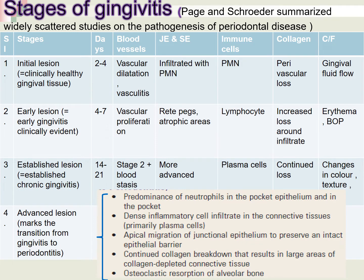Page and Schroeder summarized studies on pathogenesis of periodontitis and identified four stages of gingivitis. The first is the initial lesion, equivalent to clinically healthy gingival tissue, occurring two to four days after plaque accumulation. It features vascular dilatation and vasculitis of blood vessels, with neutrophils as the first line of defense cells, perivascular collagen loss, and an increased gingival crevicular fluid flow as the initial clinical feature.